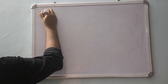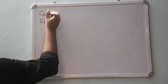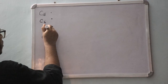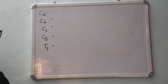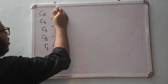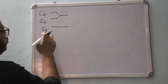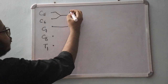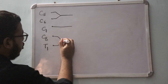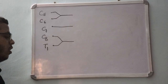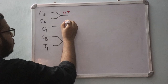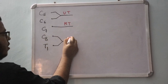We will discuss this with a diagram. The five roots are C5, C6, C7, C8, and T1. After the roots, the next segment is the trunks. C5 and C6 combine to form the upper trunk, C7 continues as the middle trunk, and C8 and T1 combine to form the lower trunk — upper trunk (UT), middle trunk (MT), and lower trunk (LT).